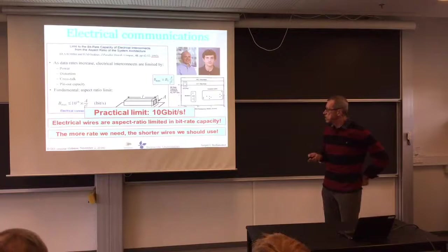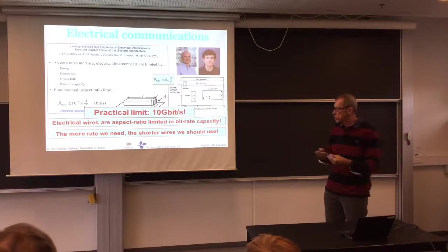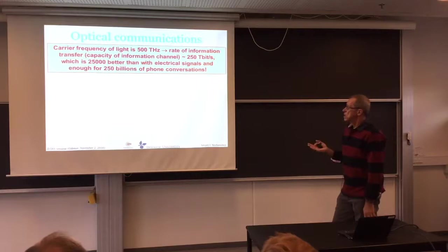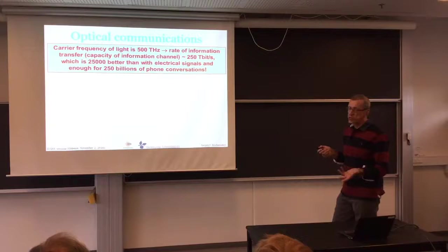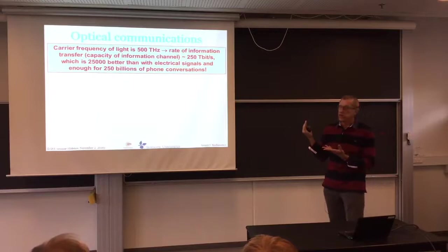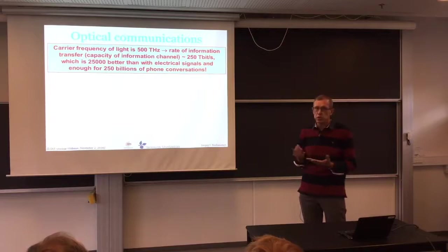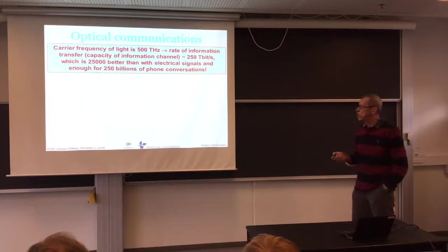10 gigabits per second sounds like a lot, but it's not if you think about computers — we have to synchronize all the chips. Looking at optical channels, the carrier frequency of visible light is about 500 terahertz. Dividing by two, the real limit you can achieve with optics is 250 terabits per second — bandwidth that is not easy to fill even with modern computer games or virtual reality.